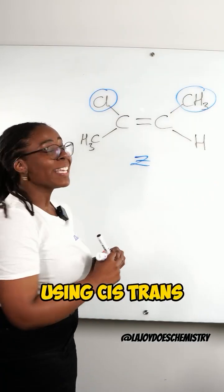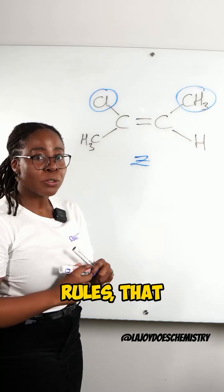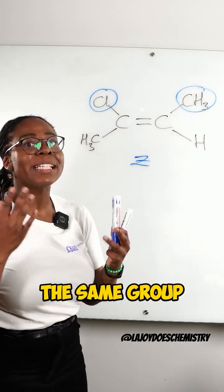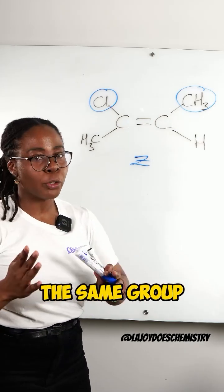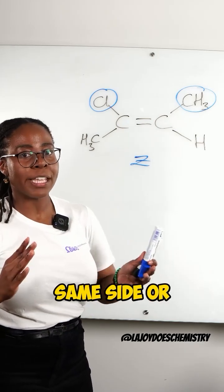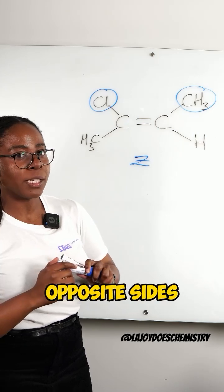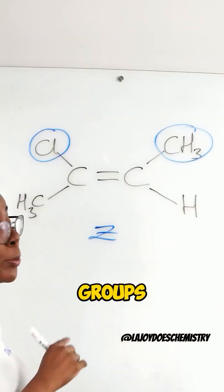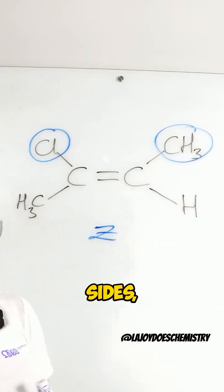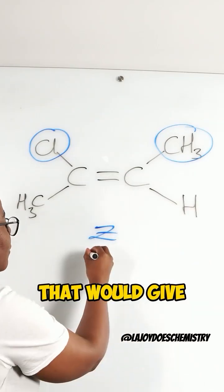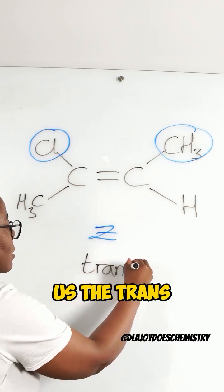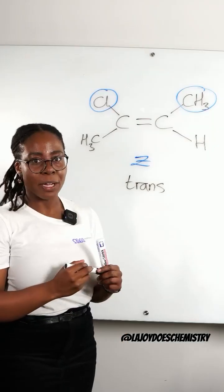But if we're using cis-trans rules, that depends on whether we have the same group on the same side or opposite sides. And because we have the methyl groups on opposite sides, that would give us the trans isomer.